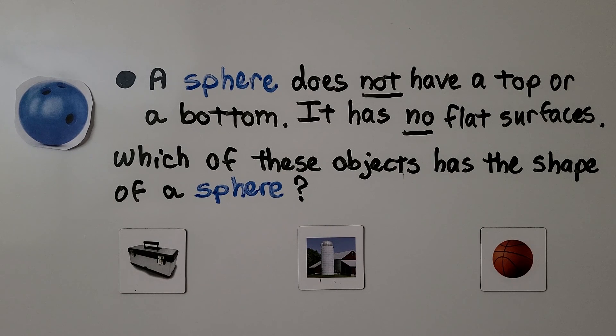A sphere does not have a top or bottom, and it has no flat surfaces. It's a ball, like this bowling ball. So which of these objects has the shape of a sphere?